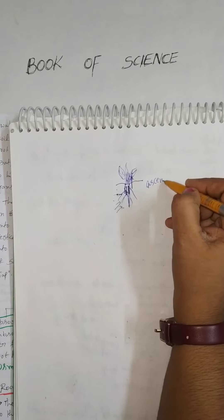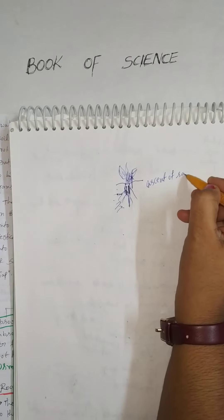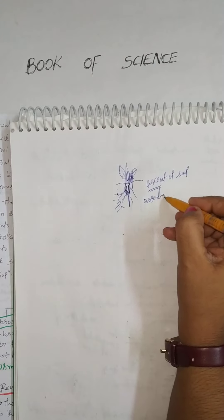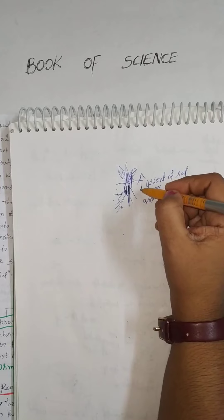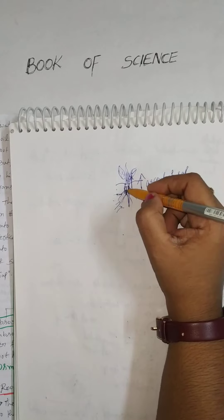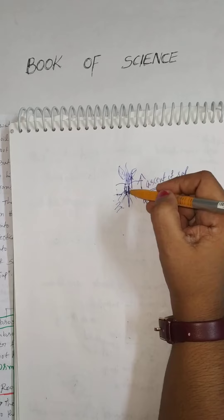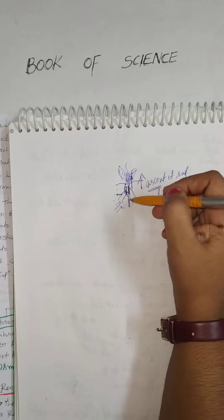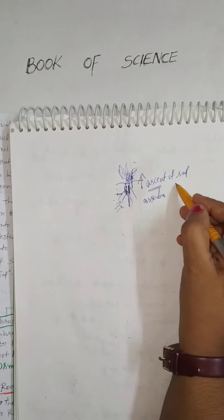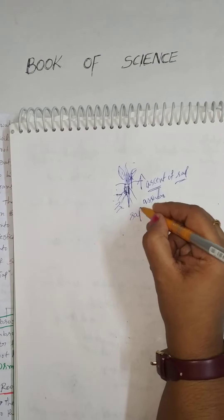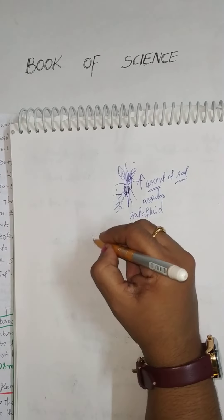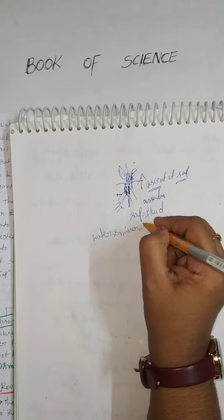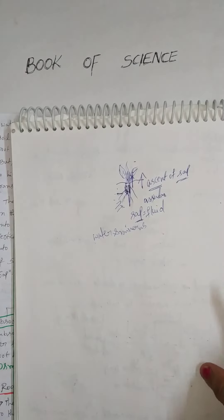This upward movement is called ascent of sap. Ascent means ascending order — from downwards to upwards. So water moves in ascending order. Sap means fluid — here, water and minerals. Water and minerals together are called sap, so this process is called ascent of sap.